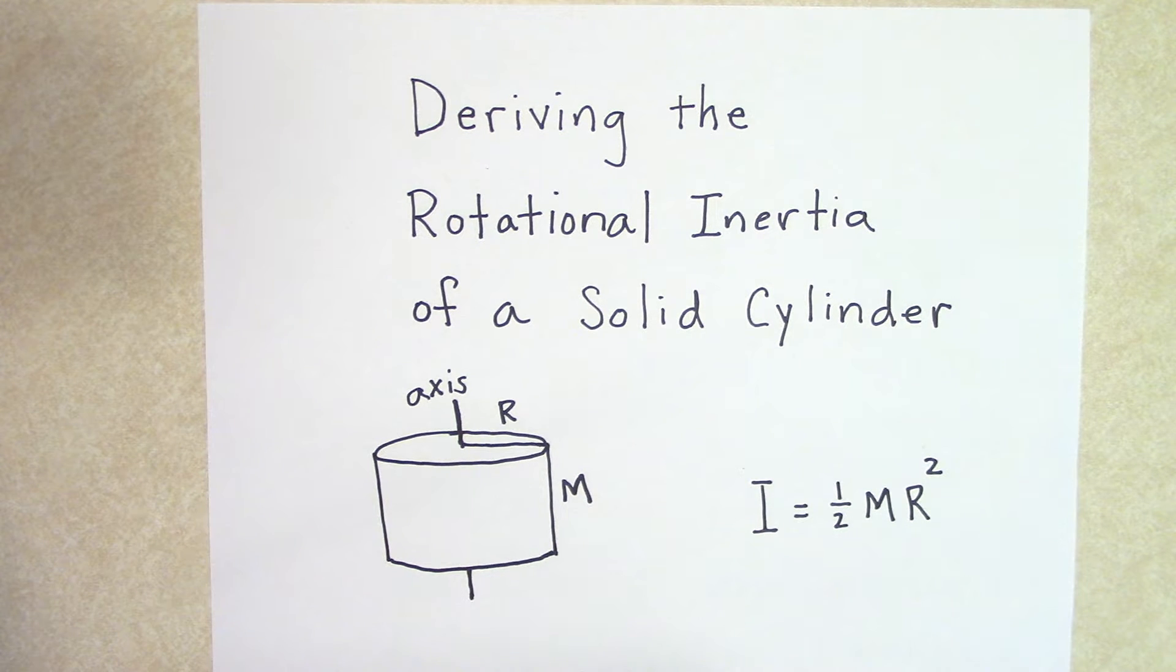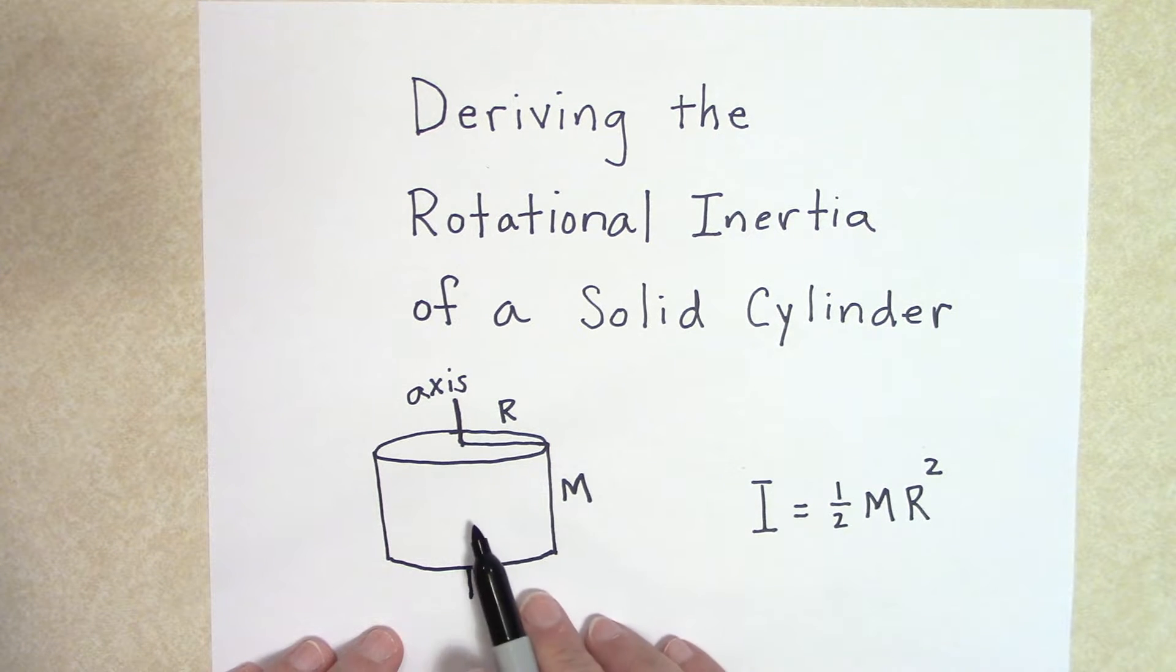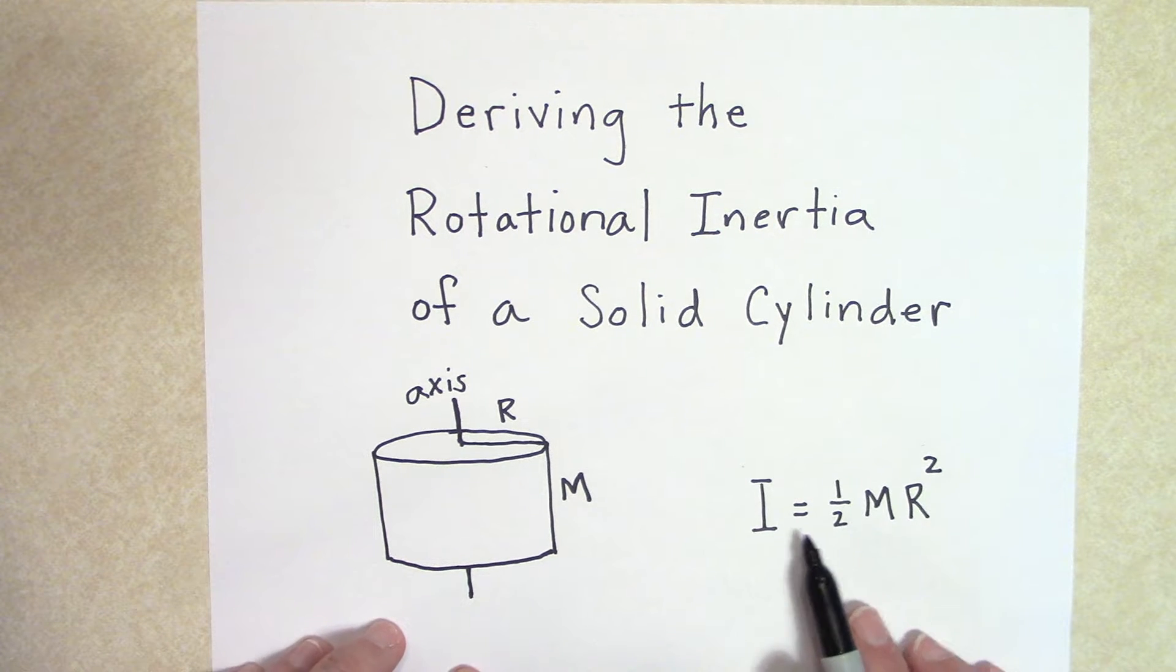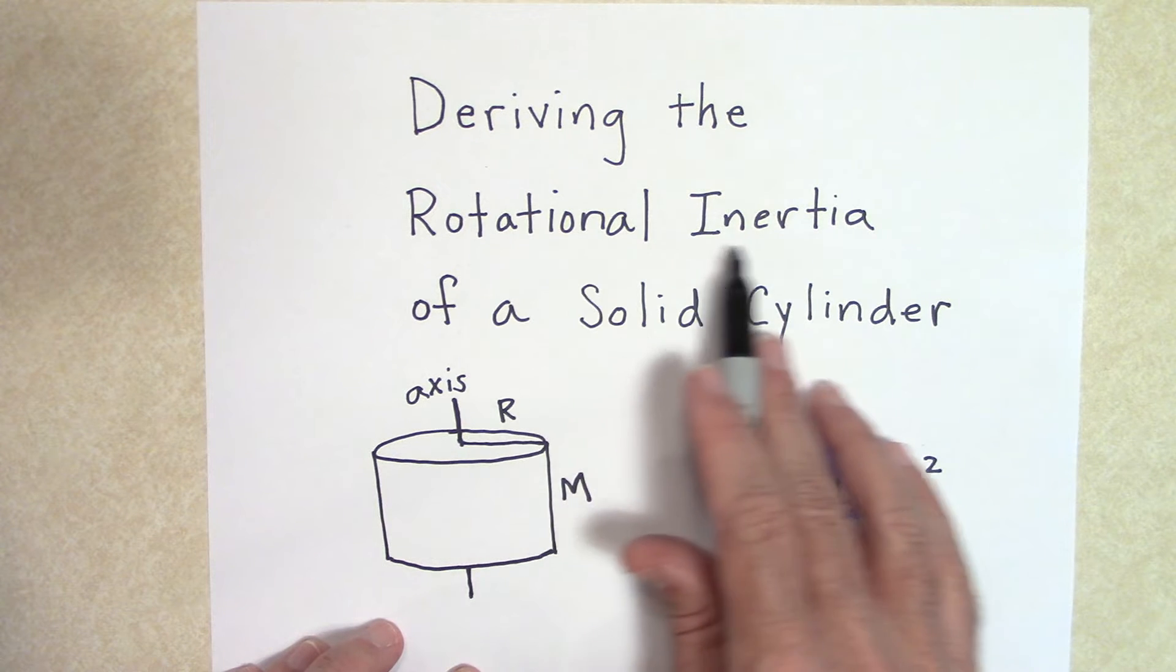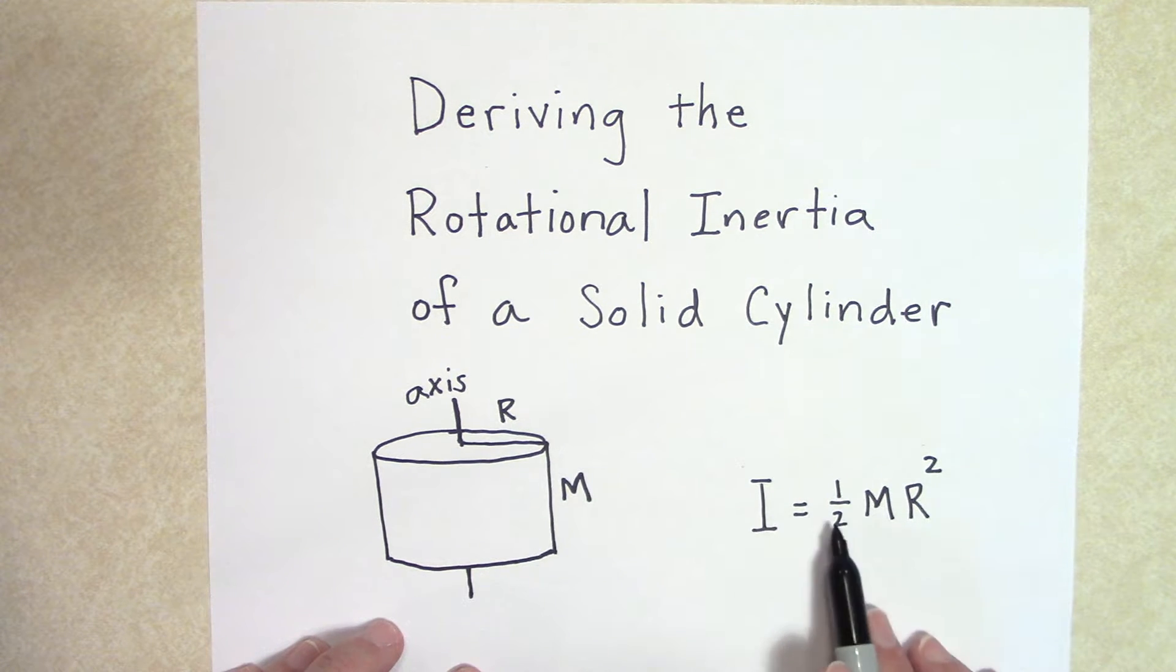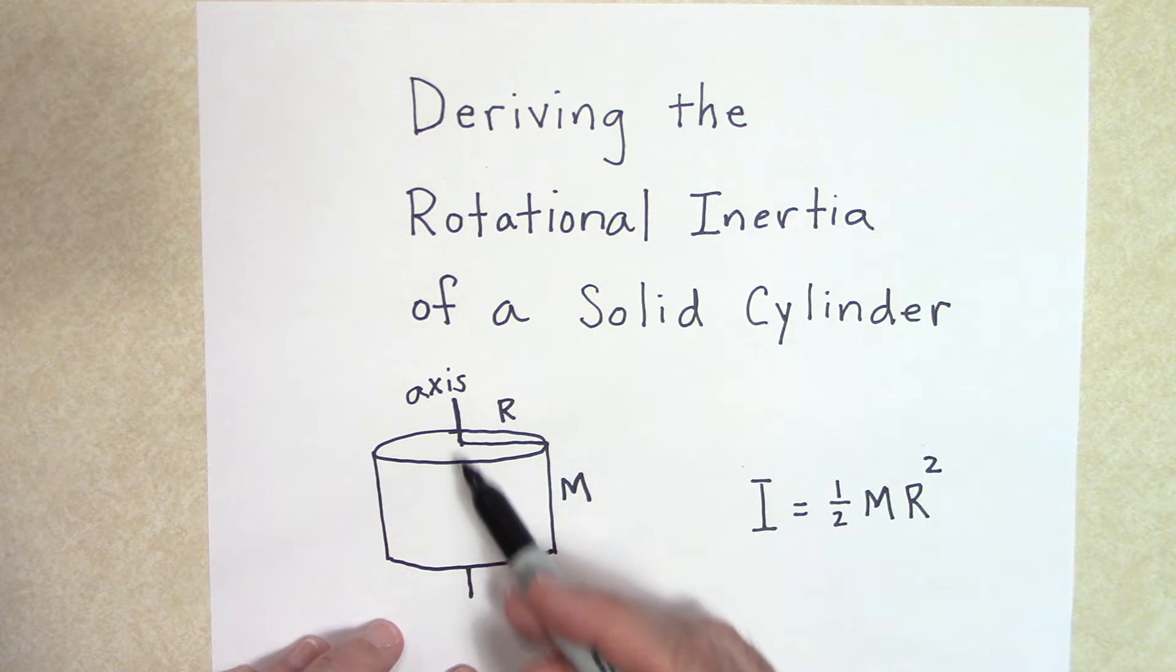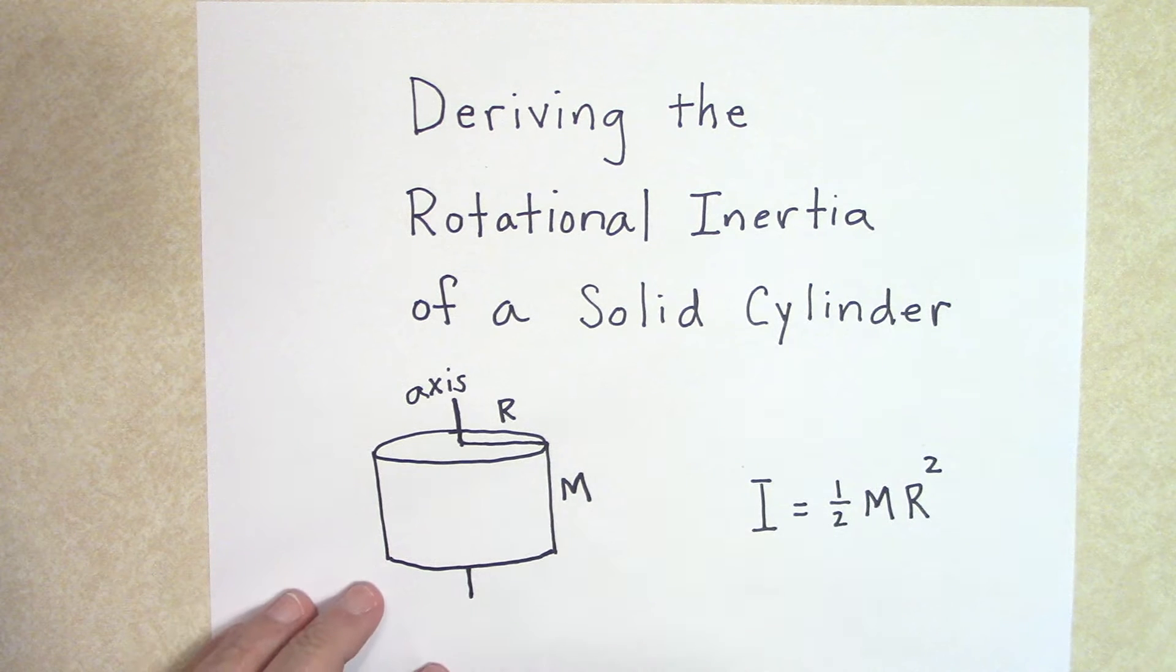Welcome. Today I thought I would derive the rotational inertia of a solid cylinder that has a uniform mass density. Now I've already derived the rotational inertia for a disc, but this one is for a cylinder. It turns out they both give you the same answer. If all you want to know and you don't want to go through the derivation, the answer is that I equals one half the mass of the cylinder times R squared. That's when the axis is through the center of the cylinder. So there you have it.